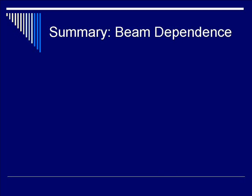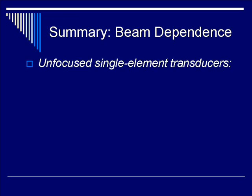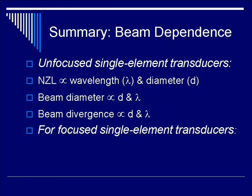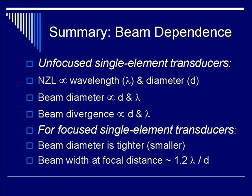In summary, beam dependence for unfocused single element transducers: the NZL is proportional to the square of transducer diameter D and inversely proportional to wavelength lambda. Beam diameter and beam divergence are also proportional to lambda and inversely proportional to D. For focused single element transducers, using a fixed lens or active focusing with a transducer array, the beam diameter is much tighter, and the beam width at focal distance is similarly defined as 1.2 lambda over D.